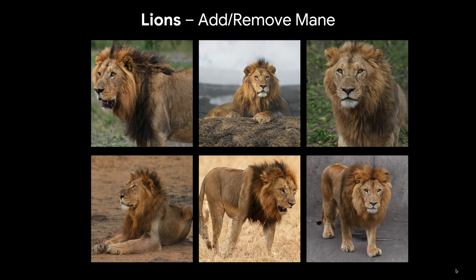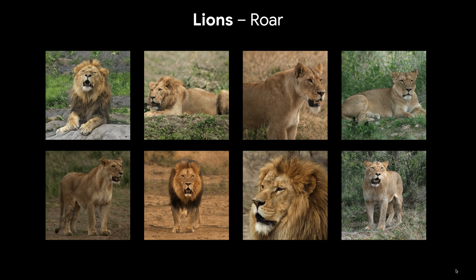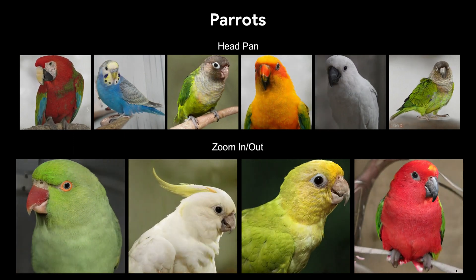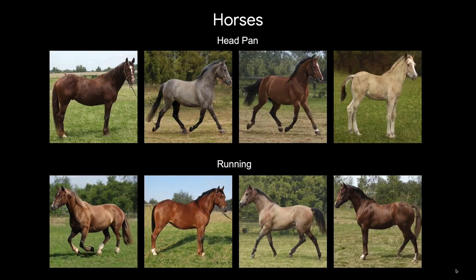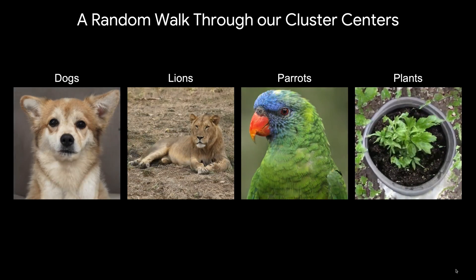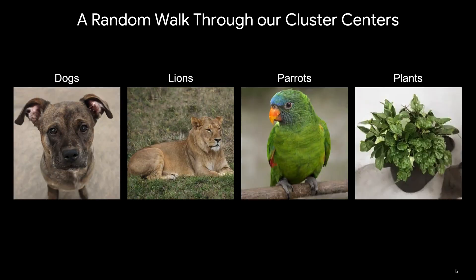The StyleGAN models that we trained not only produce high quality images, but also preserve StyleGAN editing capabilities. For example, we extracted a few editing directions for lions and visualized them: adding or removing the mane, turning the lion's head, and making the lion roar. Here are some more editing examples for parrots and for horses. We can further take a random walk between cluster centers in the latent space of various domains. As can be seen, the cluster centers are highly diverse and capture well the multimodal nature of the data.